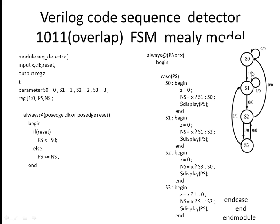In this video we'll learn how to write Verilog code for a sequence detector. A sequence detector is used for detecting the sequence 1011 — that means if you get 1011 you should get an output of 1. Overlap is allowed. This is an example under finite state machines.